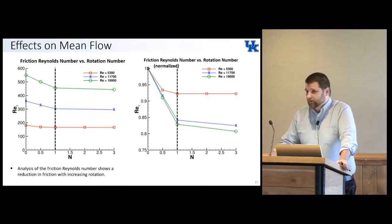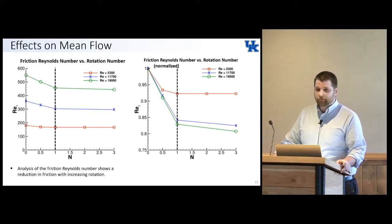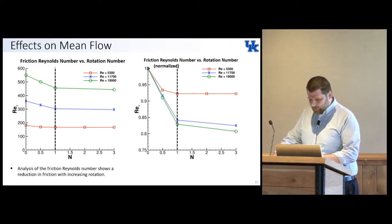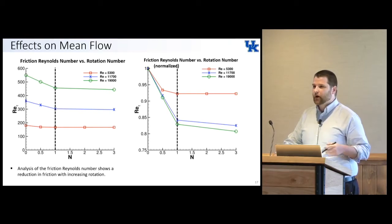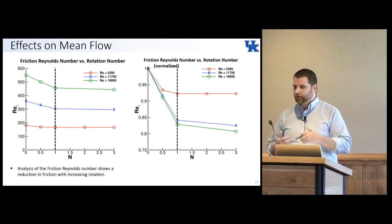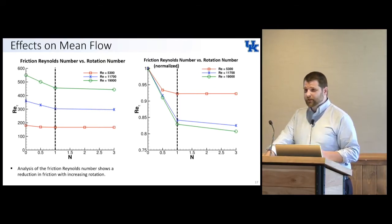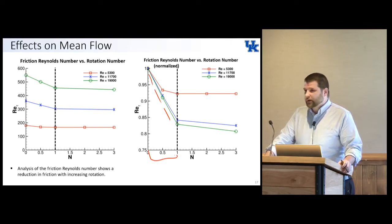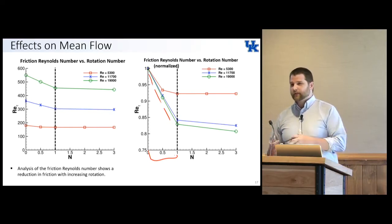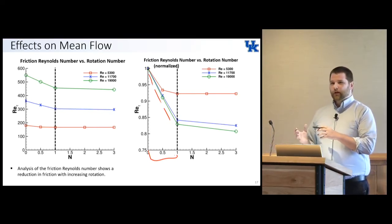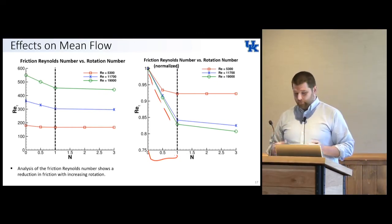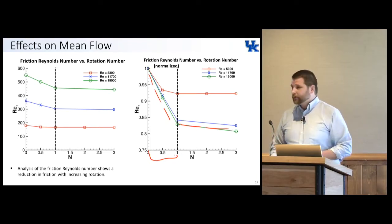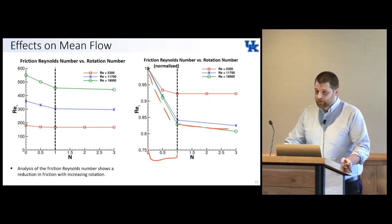Another way to quantify turbulence suppression is by looking at friction — specifically the friction Reynolds number normalized by the non-rotating case at each Reynolds number, so we can see the relative reduction in friction. We see two very specific zones emerging. At what I call moderate rotation rates — N equals one or less — we see very efficient reduction in friction, especially at high Reynolds numbers. However, once we advance beyond N equals one, where the azimuthal Reynolds number is much higher than the bulk Reynolds number, that efficiency changes drastically and we start to see less friction reduction with increasing rotation.